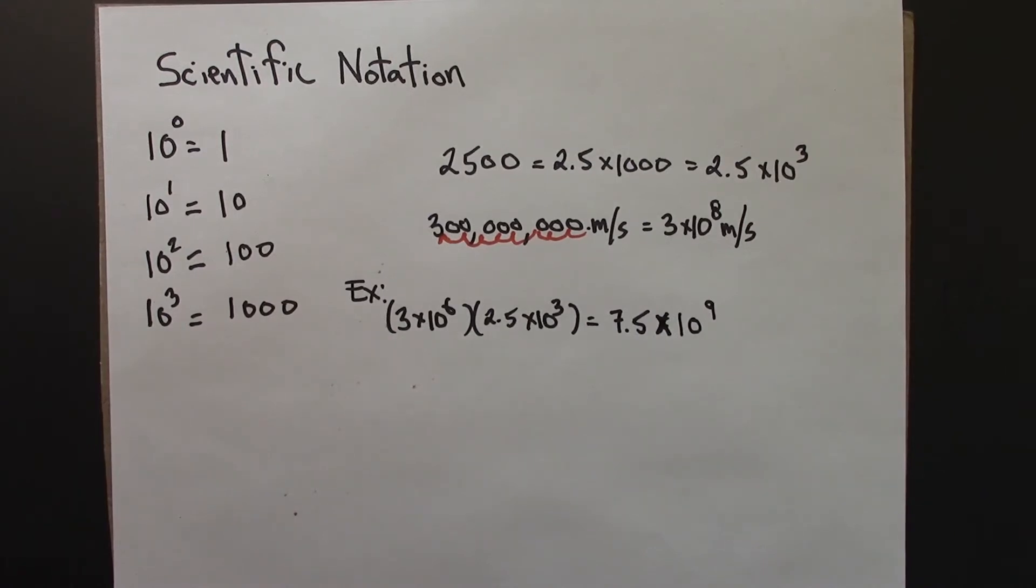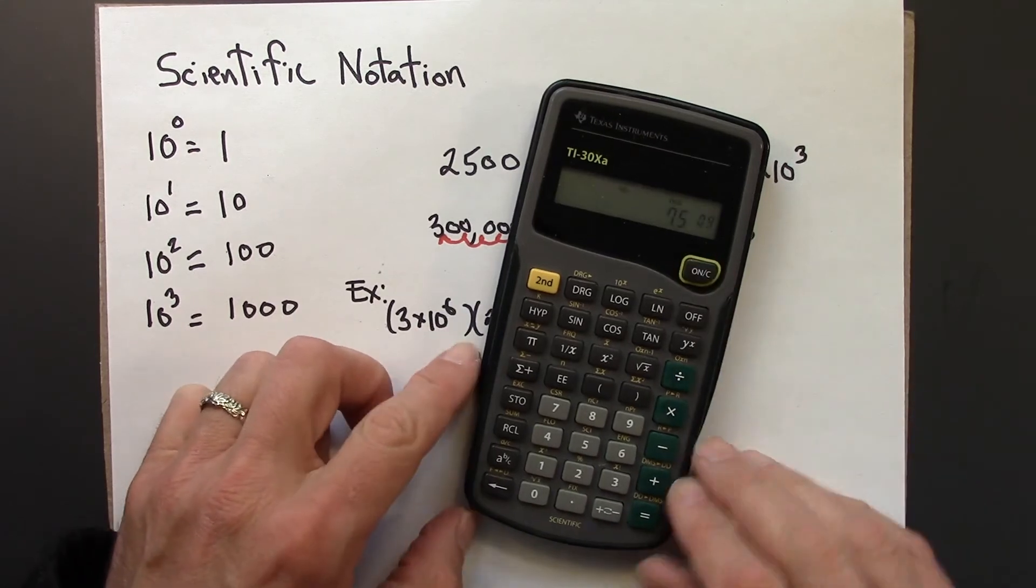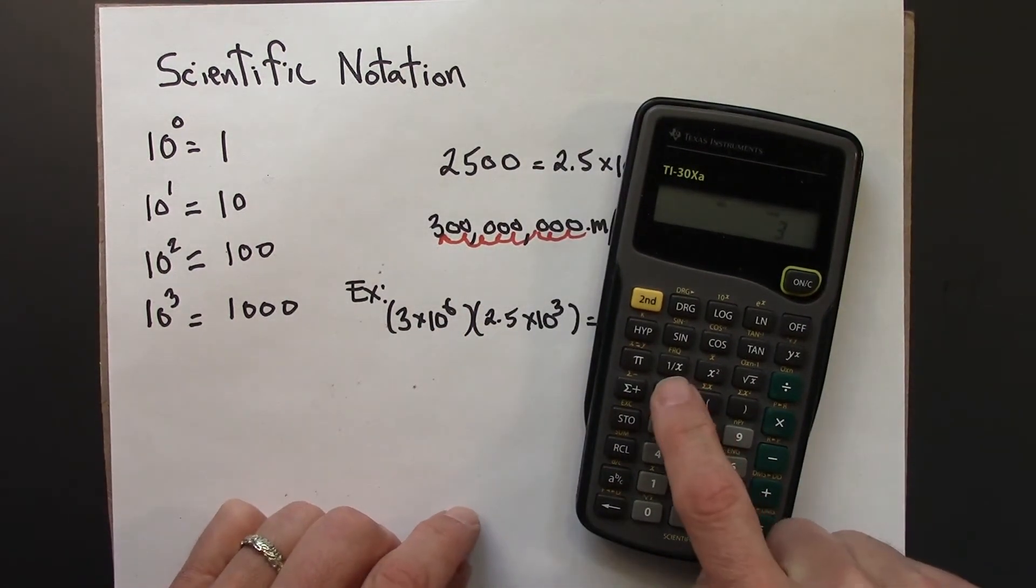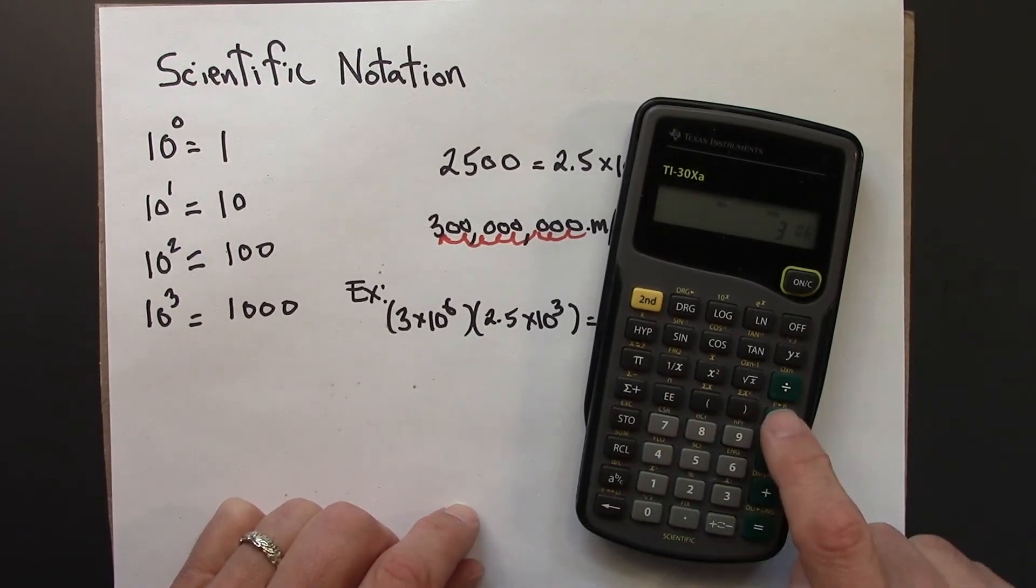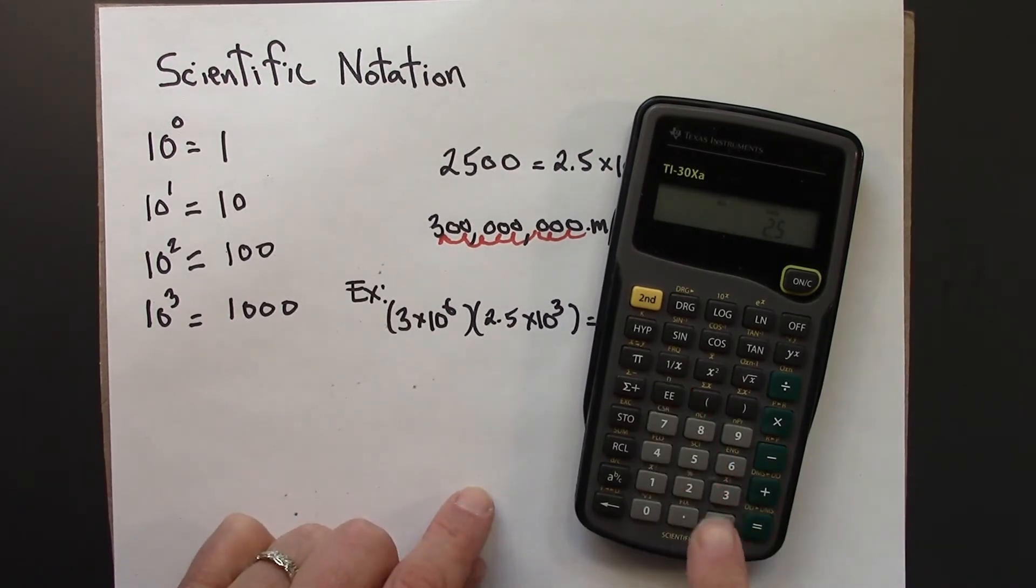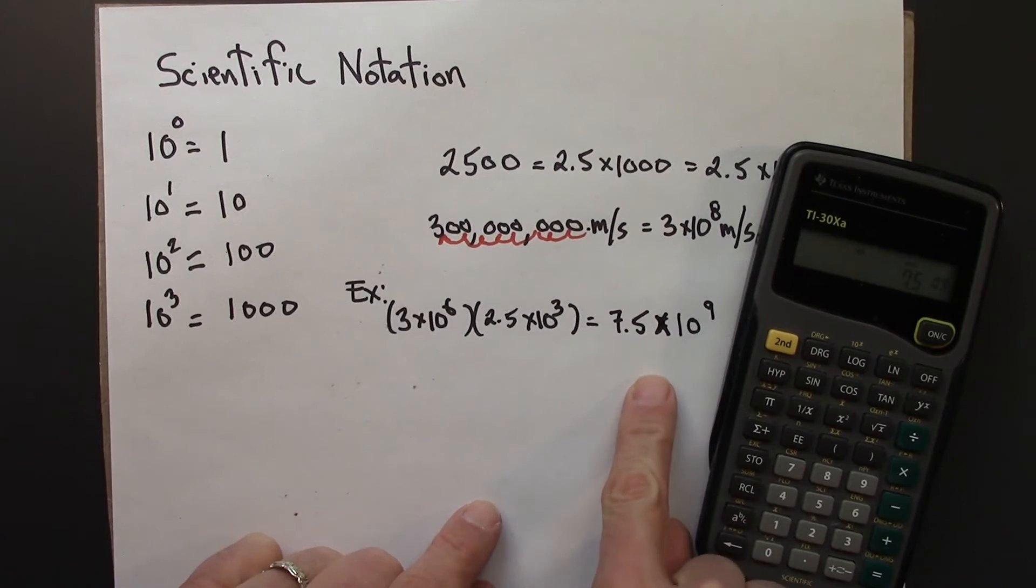And you could also, of course, do that directly on your calculator. And everybody's calculator is a little different. Here's how I might do that on mine. 3, this E button, I would read as times 10 to the 6. Times 2.5. This double E button. Times 10 to the 3. And 7.5 times 10 to the 9, which is the number that we got there.